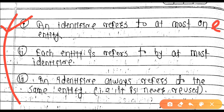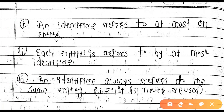Each entity is referred to by at most one identifier. And an identifier always refers to the same entity — it is never reused for a different entity.